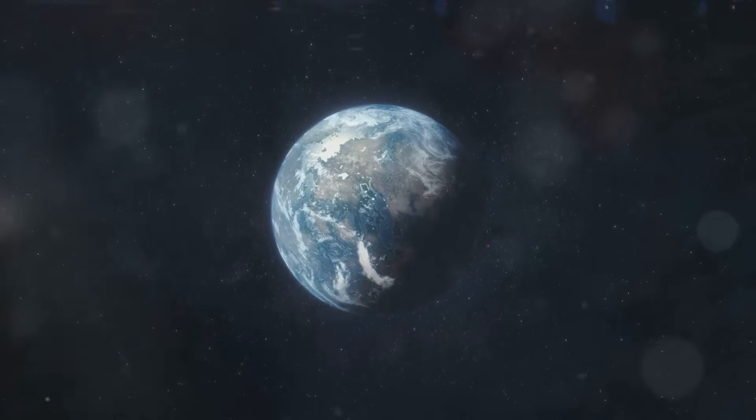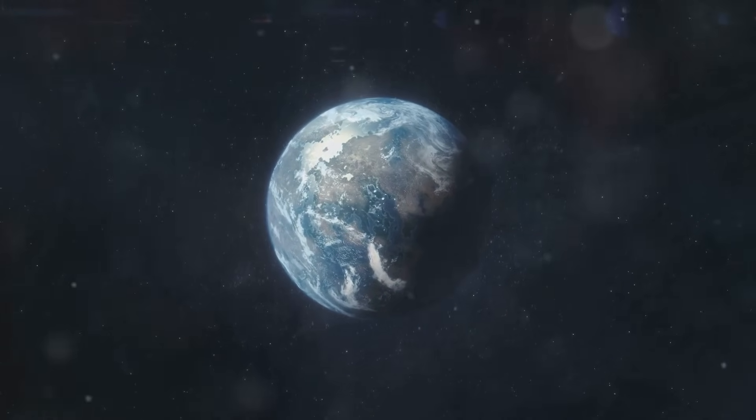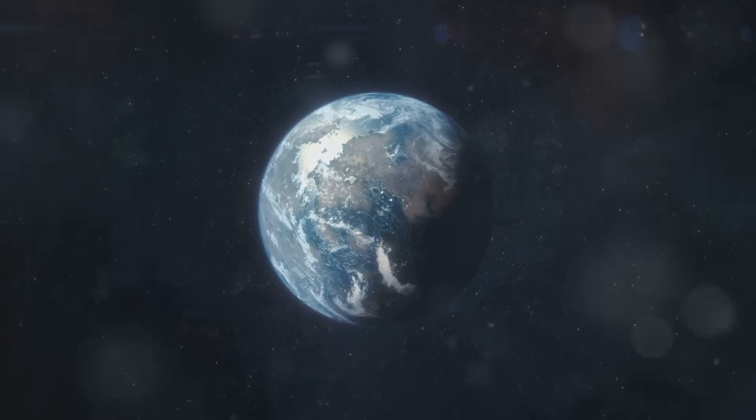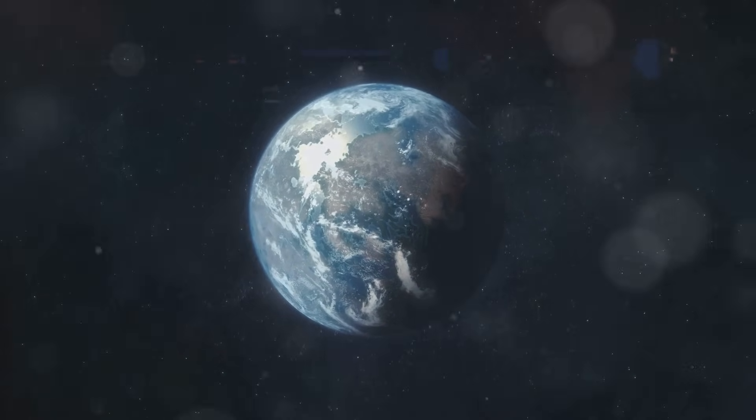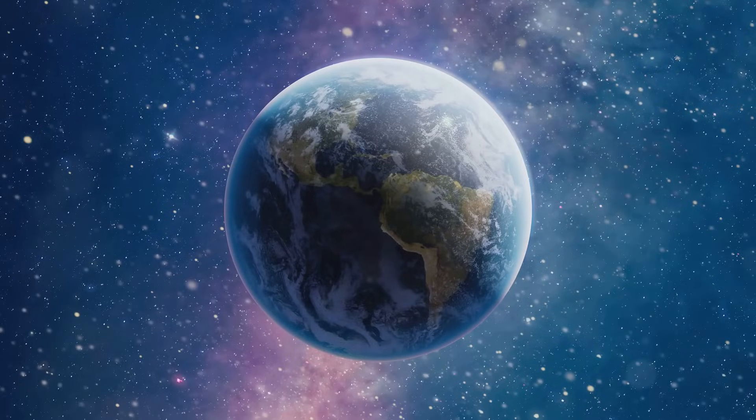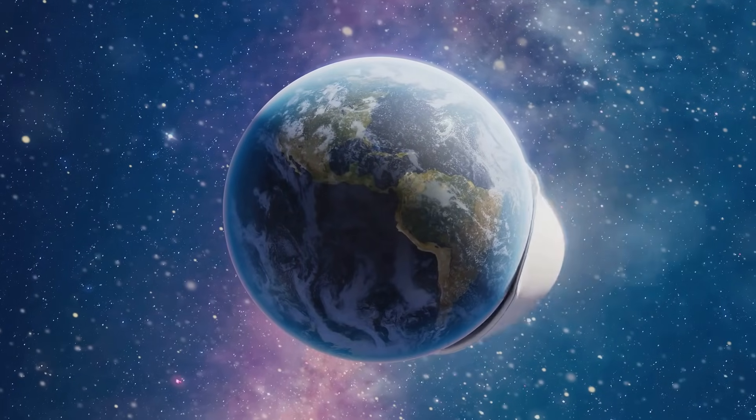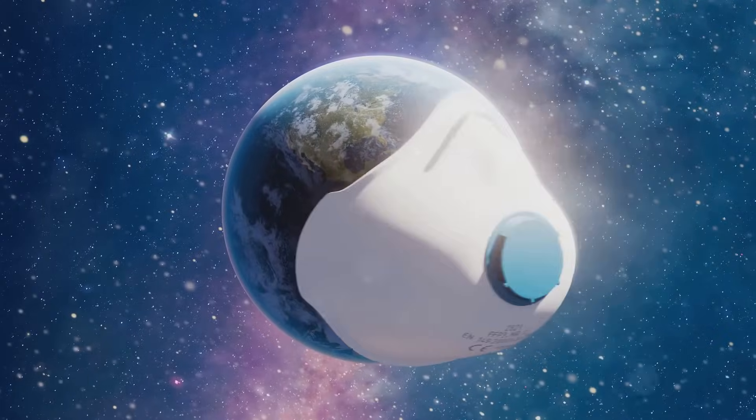This is because Earth is the perfect distance from the Sun, situated in what scientists call the Habitable Zone, or the Goldilocks Zone. This means that our planet is neither too close nor too far from the Sun, allowing for the right temperatures to support liquid water and, consequently, life.